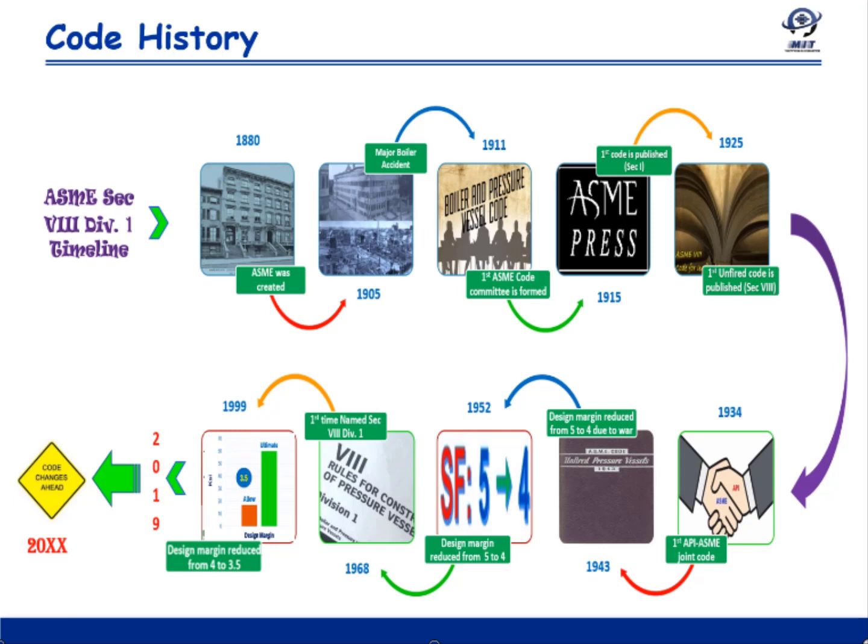Then in 1925, the first BPVC code for UPV — that is, Unfired Pressure Vessel — was issued. This code became the father of what we today know as ASME Section 8 Division 1.